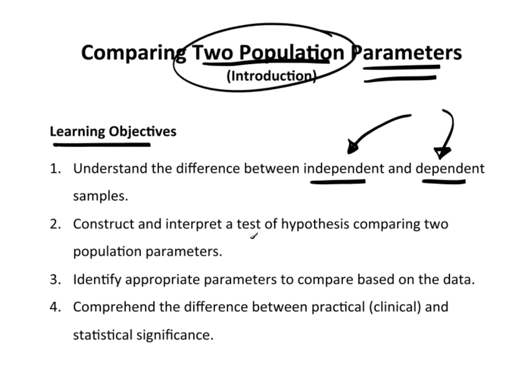We want to construct and interpret tests of hypothesis comparing these two population parameters. And the parameters that we'll be looking at will be mu, theta, and pi. So two groups of mu, two groups of theta, two groups of pi. That's what we'll be looking at.